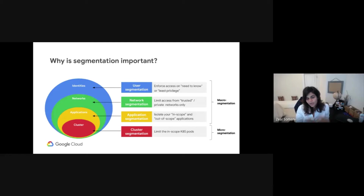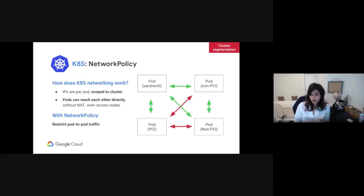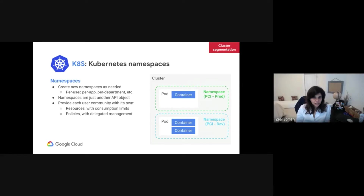With respect to containers, when we speak about segmentation, it's mainly two types. Segmentation around the cluster — macro segmentation — where you segment the users, networks, and applications. And then segmentation inside the cluster, where you do things inside a cluster to keep your pods isolated. Within a cluster, each pod has its own IP. To segment the pods, use network policies. Network policies work similar to VPC firewall rules, so you can allow or deny traffic based on IP rules. Building upon that, you can further demonstrate separation of dev and test environments versus prod to your auditor, or segment application profiles where one application contains sensitive information versus another doesn't. This is where you use namespaces.